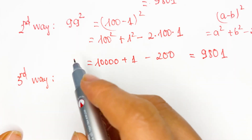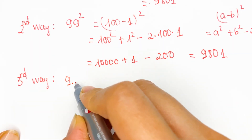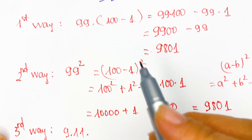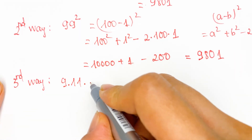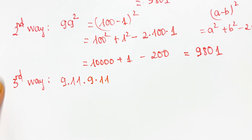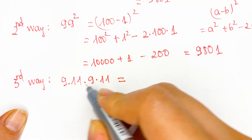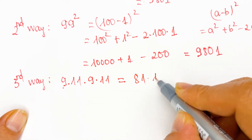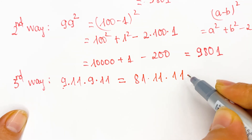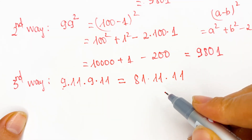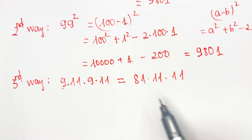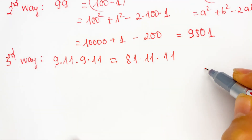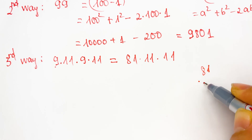You can see 99 is equal to 9 times 11. And then you can write 9 times 11 for 99, and you can have 9 times 11 again. So it equals 9 times 9, which equals 81, and then times 11 times 11. In this case, we can use a mental calculation method to multiply any number by 11. Everyone can see 81 times 11.